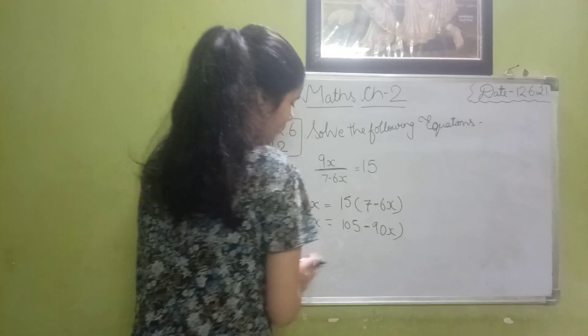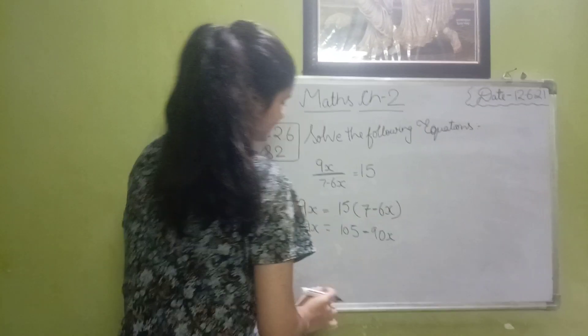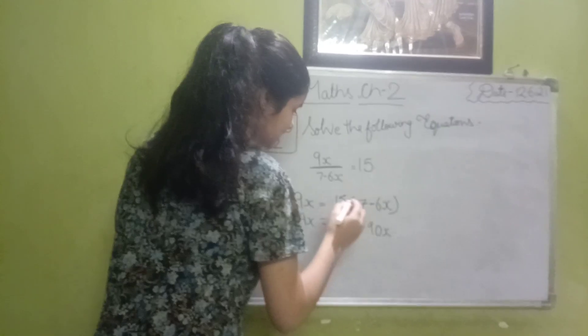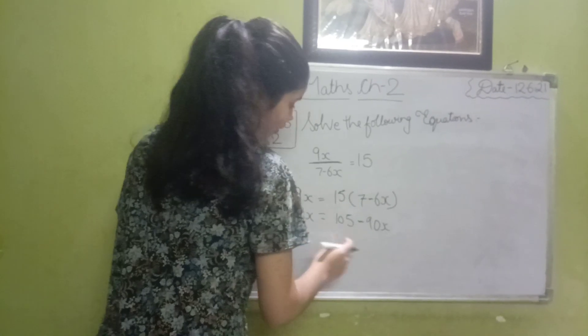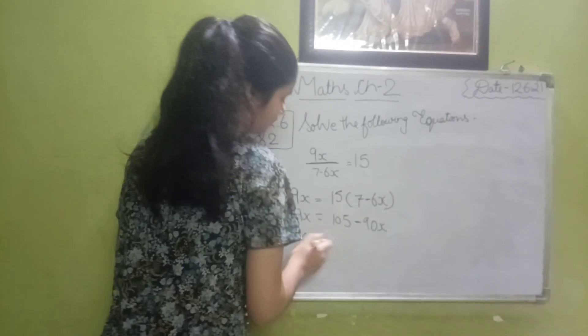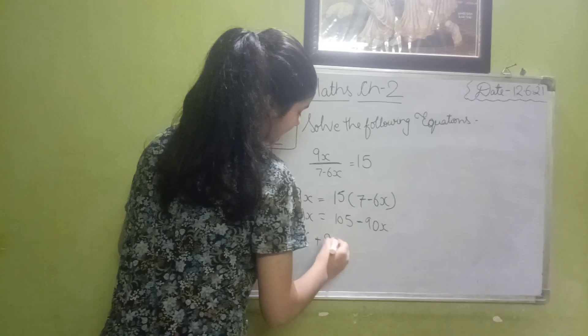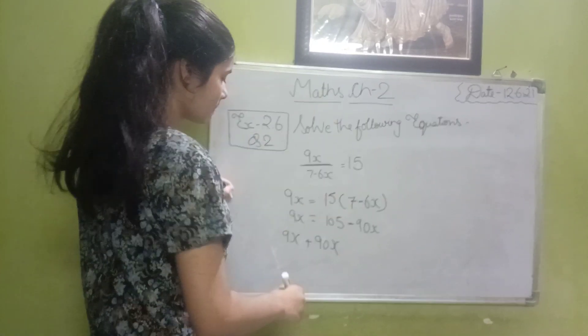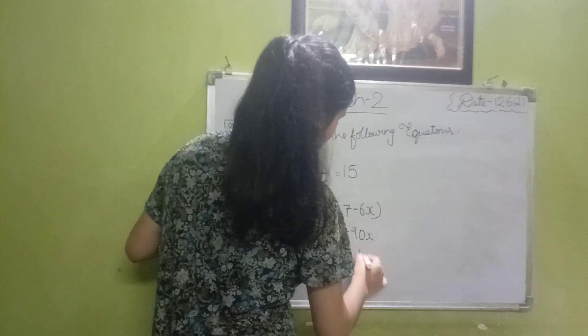Now x will be on one side and the other digits will be on one side. 9x, and here is 90 minus x, so here is plus 90x. Then equals to 105.